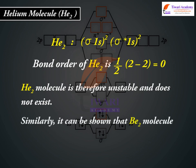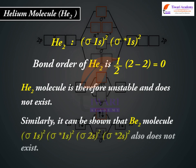Similarly, it can be shown that Be2 molecule: sigma 1s2, sigma asterisk 1s2, sigma 2s2, sigma asterisk 2s2, also does not exist.